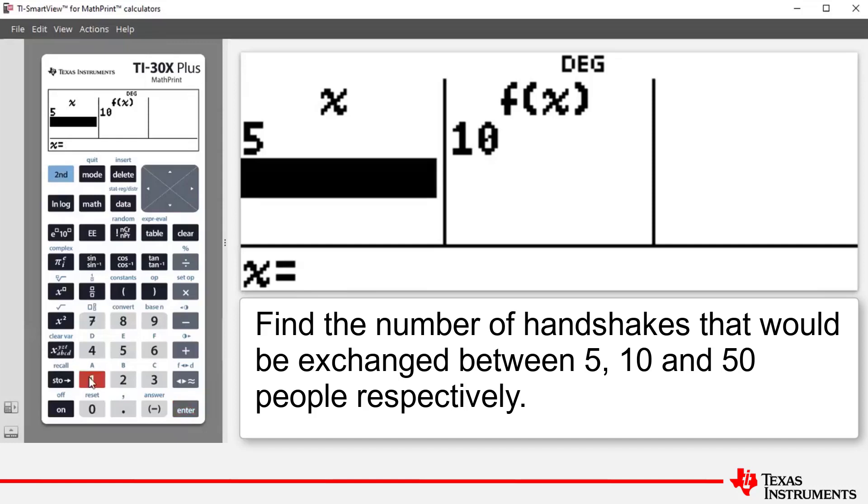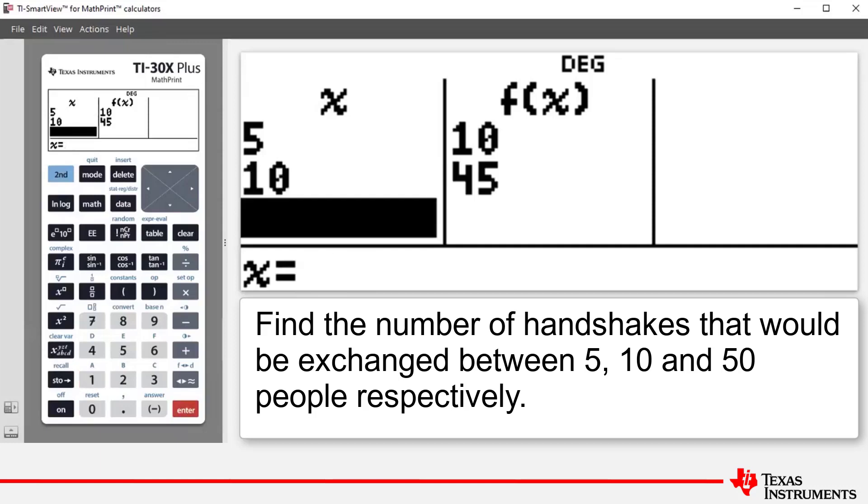If we now enter 10 and press enter, it tells us that there are 45 handshakes. And if we press 50 and press enter, it tells us there are 1225 handshakes.